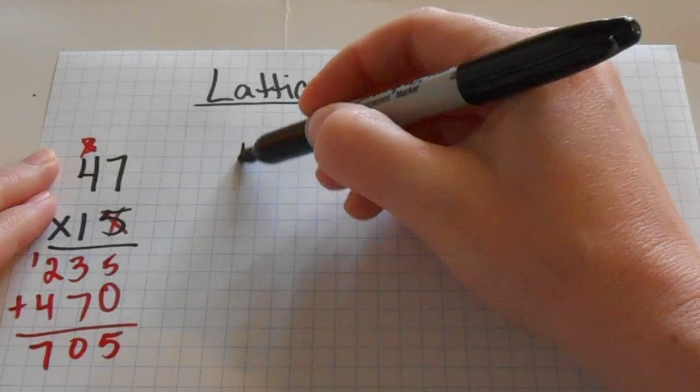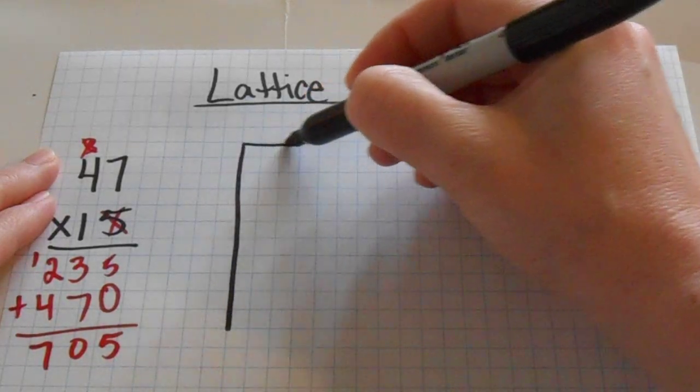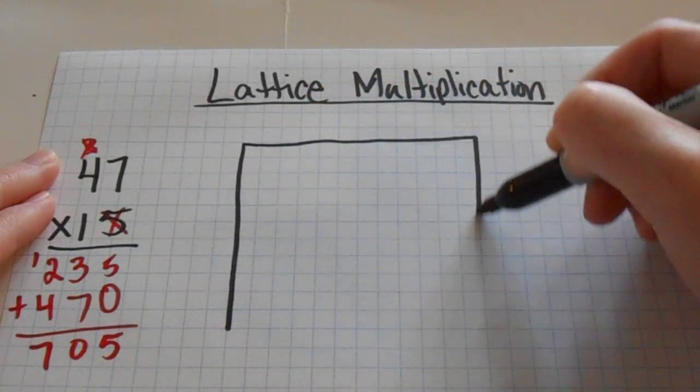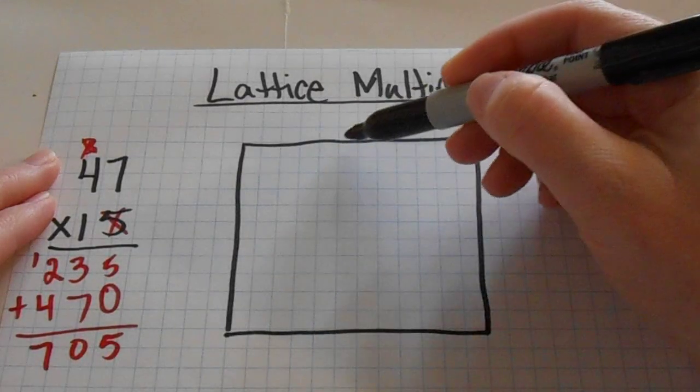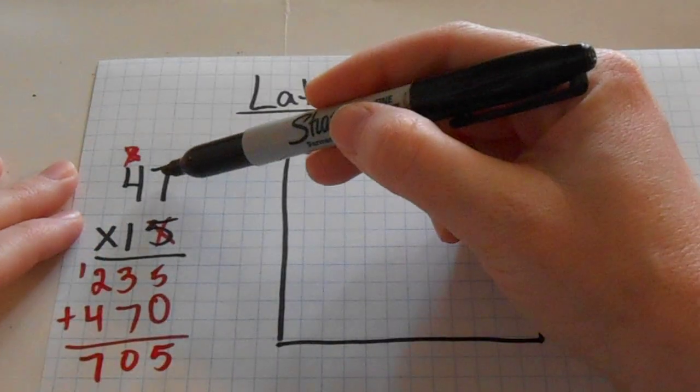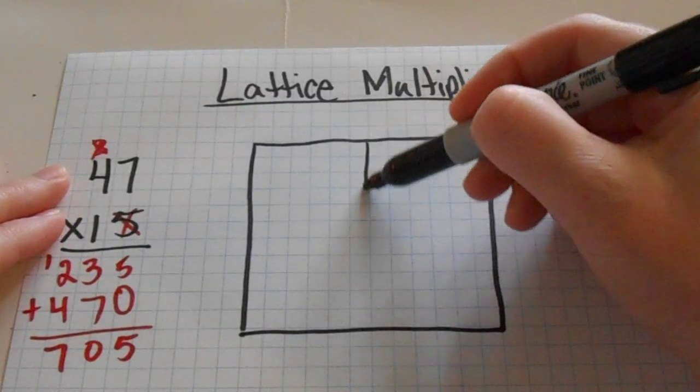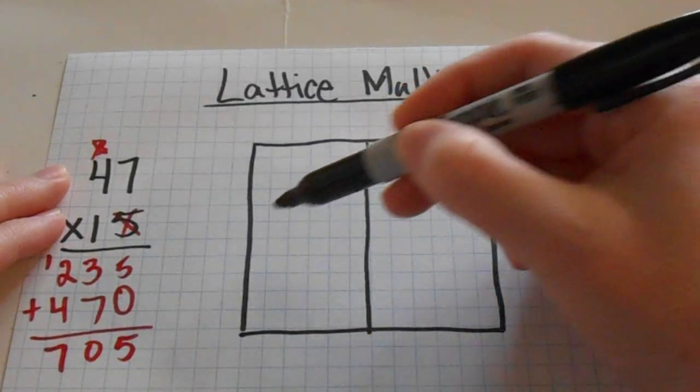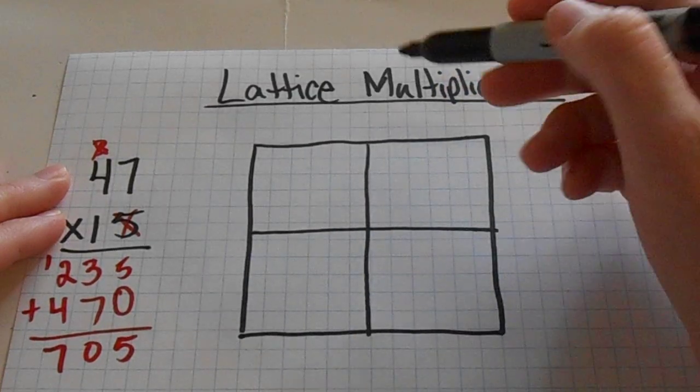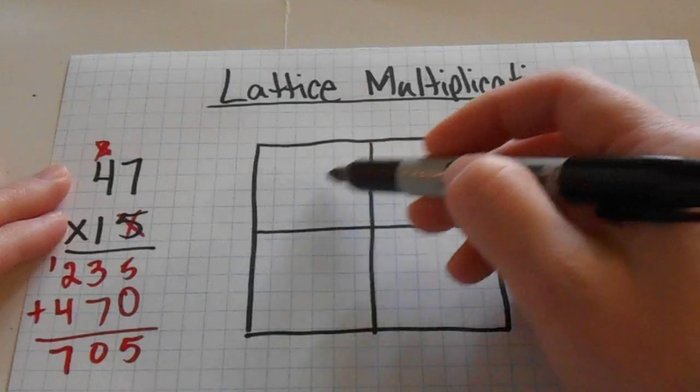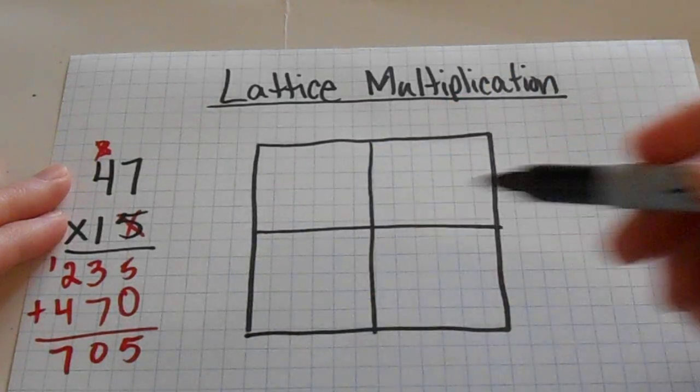So what we're going to do is I'm going to set up a big box. Now you can do this box by box if you want to if that is easier for you. But basically since we have a 2 digit by 2 digit number, we need 2 boxes here. And then we're going to cut that in half. And we need 2 boxes going this way. And what we're going to do is draw some diagonal lines across these boxes.